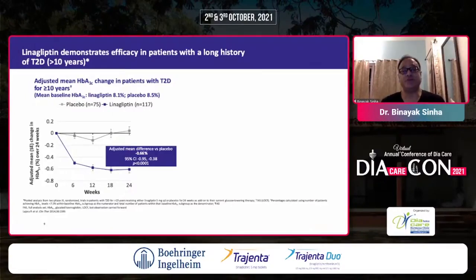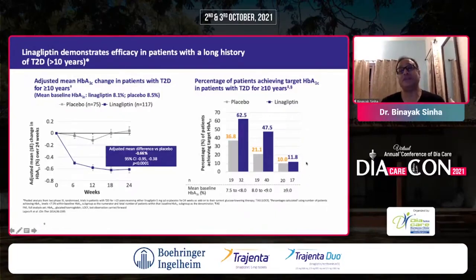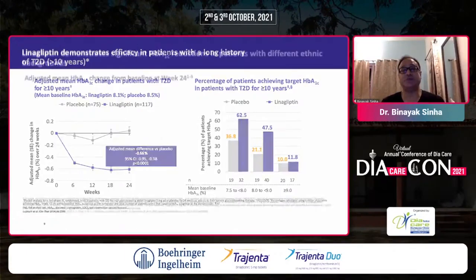A large percentage of patients reach an HbA1c target of 7%. When HbA1c is between 7.5 to 8, or up to 9, about 50% will reach the target. And even in late diabetes when insulin is required and HbA1c is greater than 9, about 12% of people on linagliptin treatment will still reach the target HbA1c.